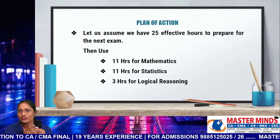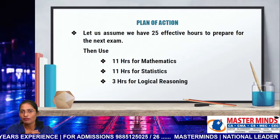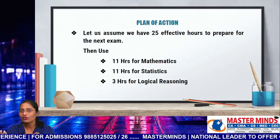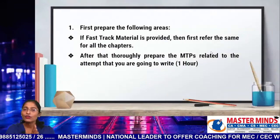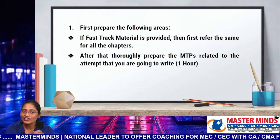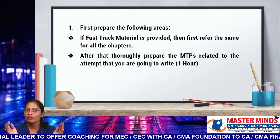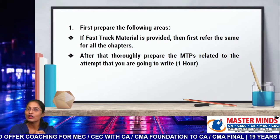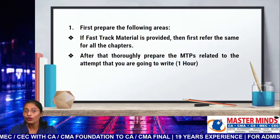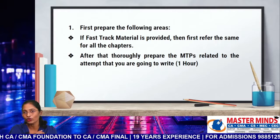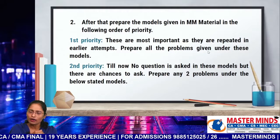What is the plan of action just day before your exam? Let us assume that we have 25 effective hours of preparation time for the next exam after writing your second paper. Then use 11 hours for Maths, 11 for Statistics and 3 hours for Logical Reasoning. First of all, prepare the following areas. The fast-track material provided to you — refer the same material for all the chapters. In this fast-track material, we have provided all the possible shortcuts along with all the formulas related to your entire Math syllabus. Go through your fast-track material thoroughly and then go for MTPs related to your current attempt. Spend at least one hour on your MTPs. First prepare fast-track material and then go for MTPs.